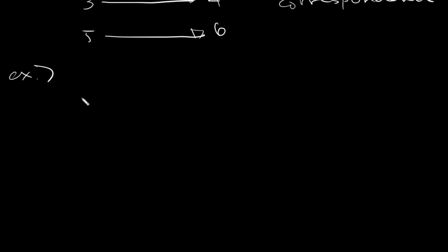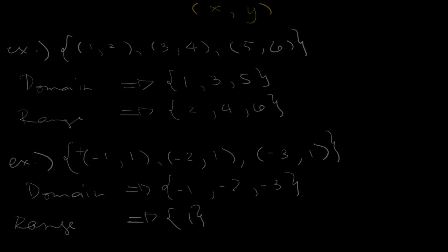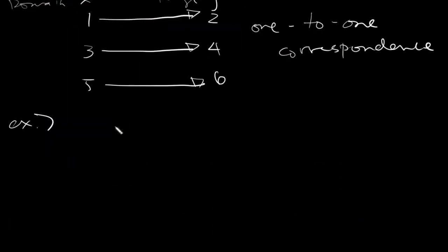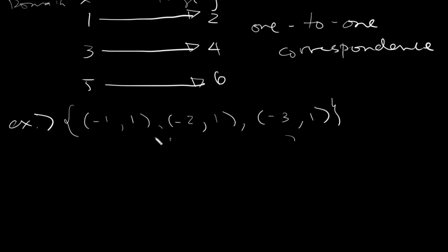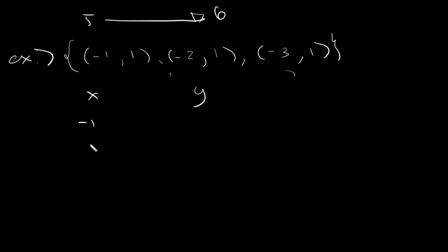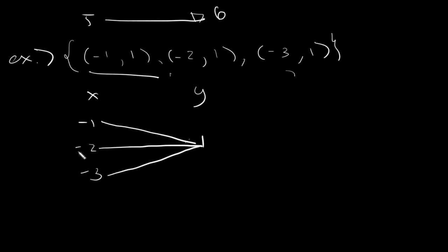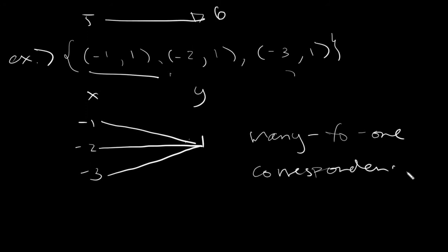For the second example {(-1,1),(-2,1),(-3,1)}, we list the domain as -1, -2, -3 in one column and just write 1 once in the range column. Pairing them: -1 maps to 1, -2 maps to 1, and -3 maps to 1. This correspondence is called many-to-one correspondence, which is the second type of relation based on correspondence.